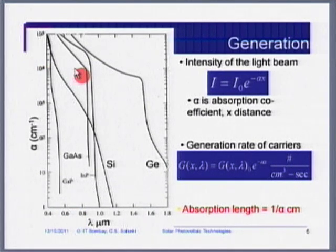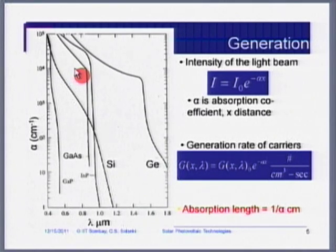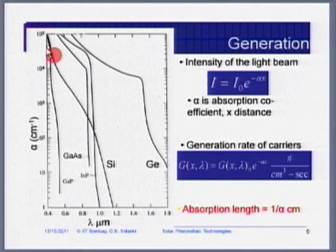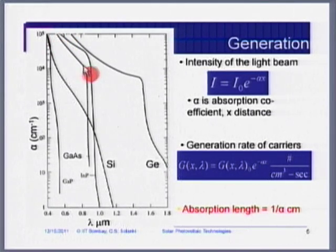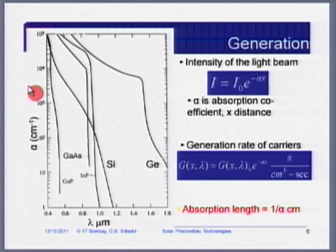Do we want the absorption coefficient to be higher or lower? We want it as high as possible, so light can be strongly absorbed. If light is strongly absorbed, we can use only thin material to absorb the whole spectrum. Higher absorption coefficient means stronger absorption. If absorption coefficient is 10⁵ or even 10⁶, it is very good. If it is only 10² per cm, it is not good.